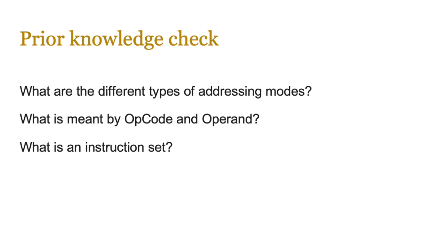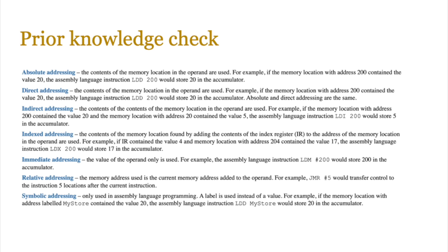Before we move on, let's do a prior knowledge check. You will be asked questions related to assembly code in the paper three exam, so ask yourself: what are the different types of addressing modes? What is meant by an opcode and operand? What is an instruction set? If you don't remember any of these, do look over your notes. There are about seven addressing modes: absolute, direct, indirect, indexed, immediate, relative, and symbolic.